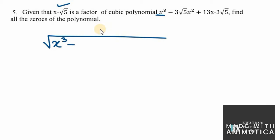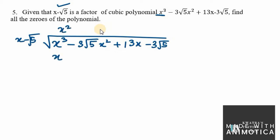We divide x³ minus 3√5 x² plus 13x minus 3√5 by x minus √5. To make the leading term x³, we multiply by x², giving x³ minus √5 x².